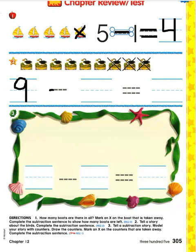Then trace over the subtraction sign. Let's write now how many were taken away. To find that, we're going to look at the picture and see how many were crossed off from the group of nine. I see one, two, three that were crossed off to be taken away.